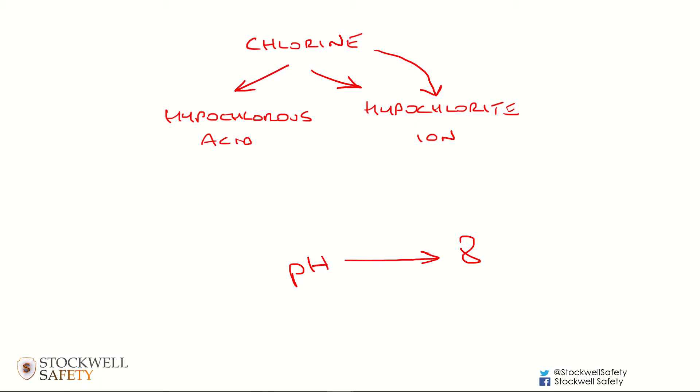If you bring the pH down more towards 7, then rather than chlorine turning into hypochlorite ion, which doesn't do much in the way of disinfection, it would turn into the useful hypochlorous acid. That's what you want.